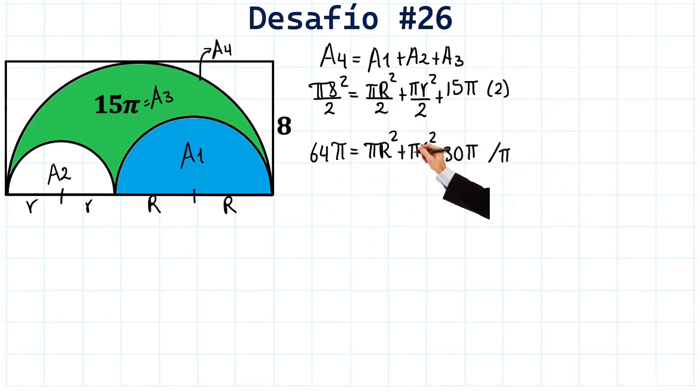Then, by dividing the entire equation by π, all the π's will disappear. Leaving 64 here. Just R squared here. Plus r squared here. And just 30 here. Fantastic.